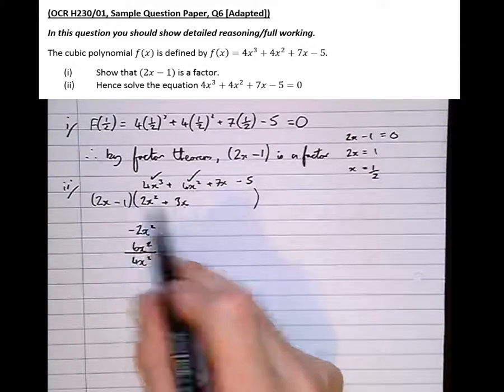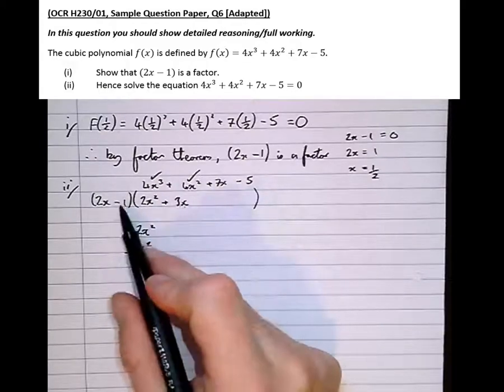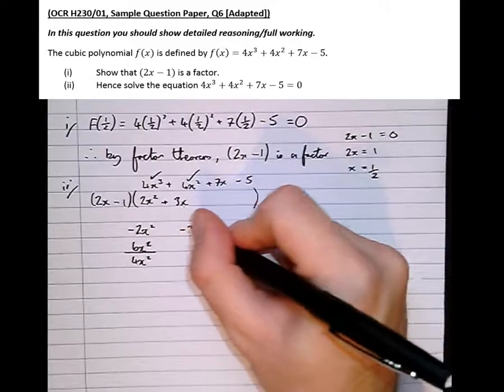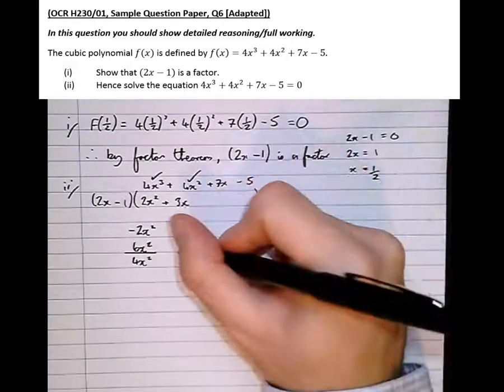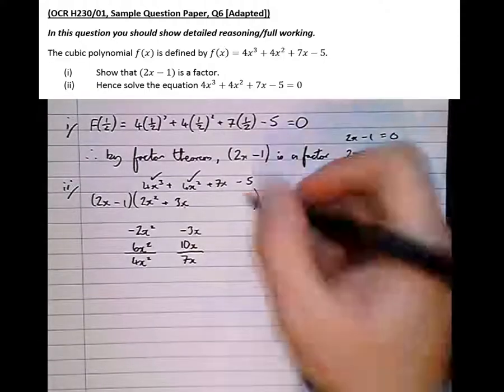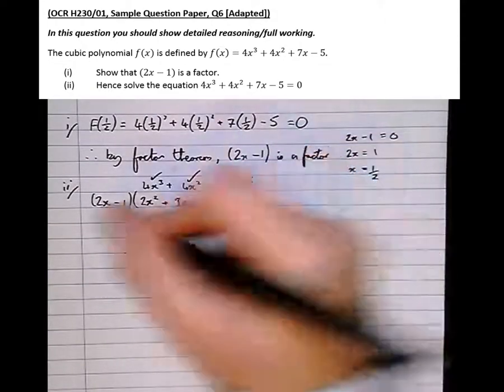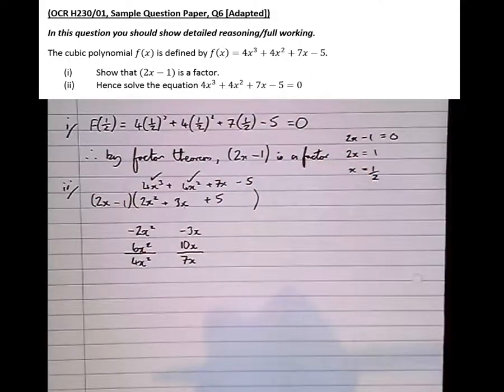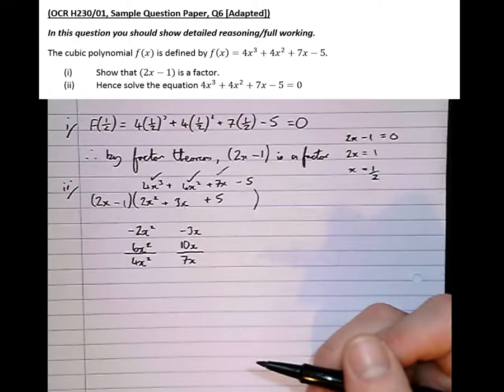However, an unwanted consequence of writing the 3x there, was that now I've got minus 1 times 3x. I've got minus 3x. Well, actually, I need 7x. So if I add on 10x, I get my 7x. So I need to find 10x somehow. Well, if I put plus 5 there, 2x times 5 is 10x. There, I've got it. The 10x I need to make 7x.